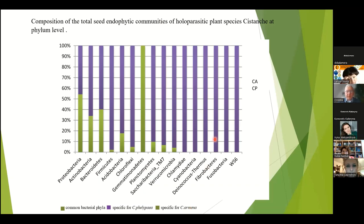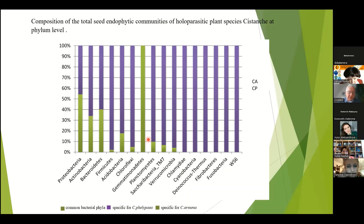As you see, there are different species of bacteria based on 16S RNA sequencing. However, they are both similar for two species, but also unique.